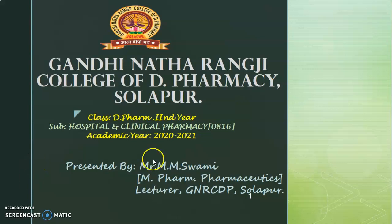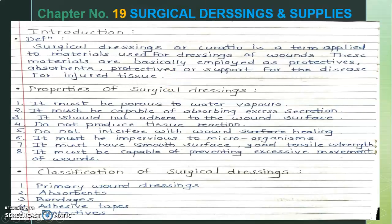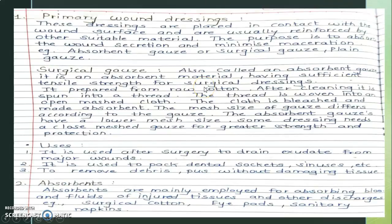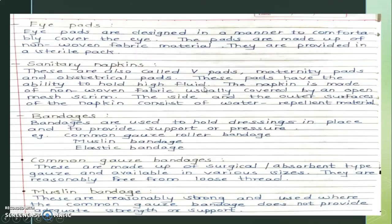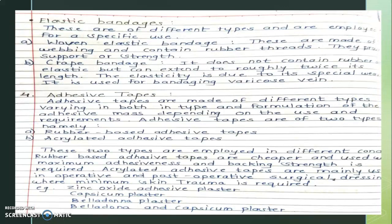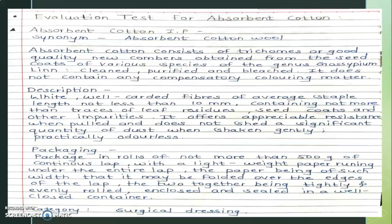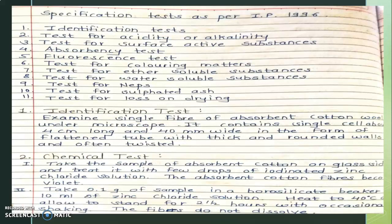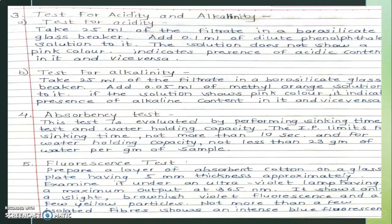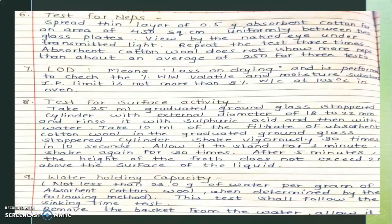Hello everyone, we already started topic number 19, that is surgical dressings and supplies. We are going to cover today the last part of this topic. We already covered the classification of surgical dressings, the meaning of absorbent cotton, how absorbent cotton is manufactured, and the different evaluation tests. There are 11 tests as per the IP 1996 for absorbent cotton. These tests are very important — go through all the tests with their procedures as well as specifications.